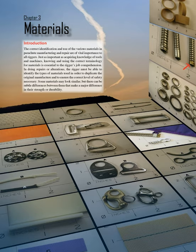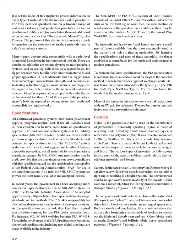Some materials may look similar, but there can be subtle differences between them that make a major difference in their strength or durability. It is not the intent of this chapter to present information on every type of material or hardware ever used in parachutes. For very detailed specifications on a broader range of materials used in current production parachutes, as well as obsolete and military surplus parachutes, there are additional reference sources, such as the Parachute Manual by Dan Pointer. The purpose of this chapter is to present as much information on the essentials of modern materials seen in today's parachute systems.